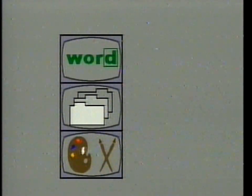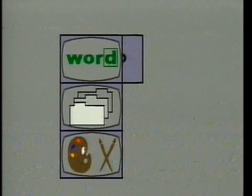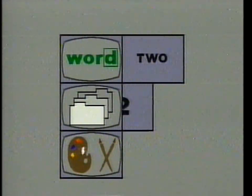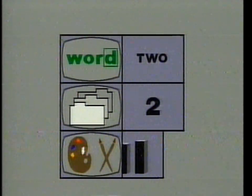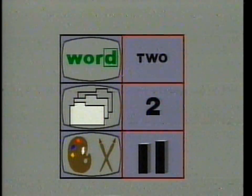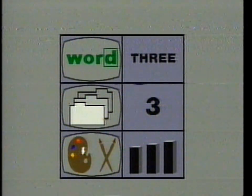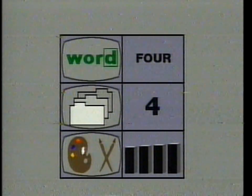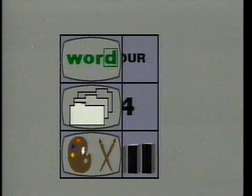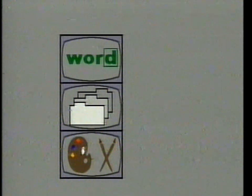Integrated software is a single program that can do the work of many individual programs. An integrated program may incorporate a word processor, a database, and a graphics package, all of which are linked to one another. This means your word processor can talk to your database, and your database can talk to your graphics. A change in one can automatically update all the others. Integrated software can solve a variety of problems with one tool, quickly and simply.